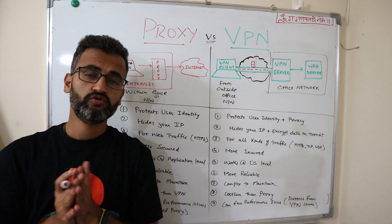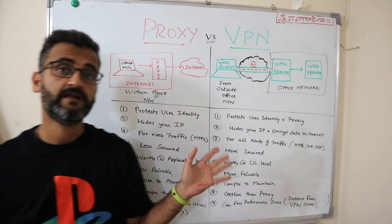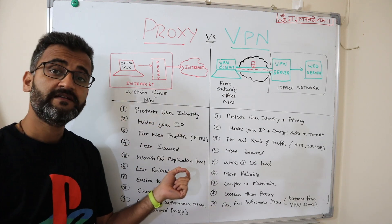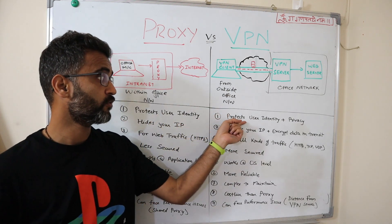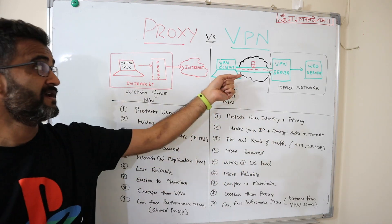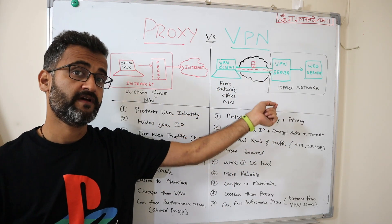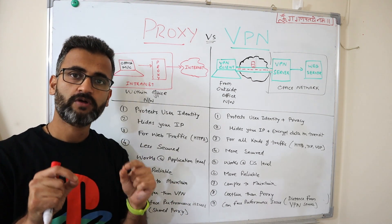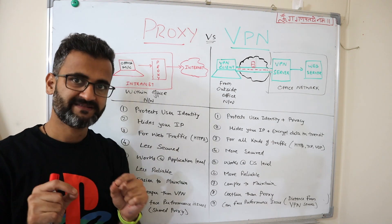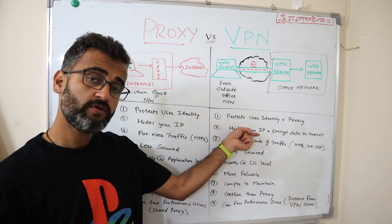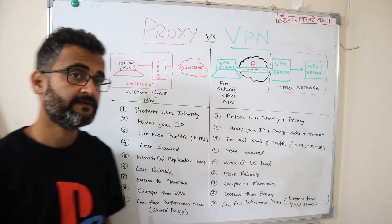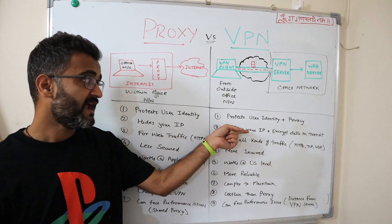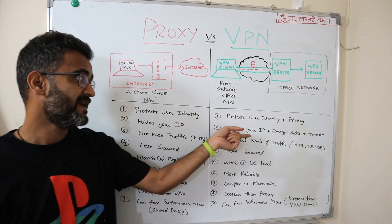Now let's go through the basic differences. First and foremost: a proxy protects user identity, whereas a VPN protects user identity AND privacy by encrypting the data in transit. Second: a proxy server hides your IP through IP masking, whereas a VPN hides your IP as well as encrypts data in transit. This means a VPN can do everything a proxy can do, plus data encryption.